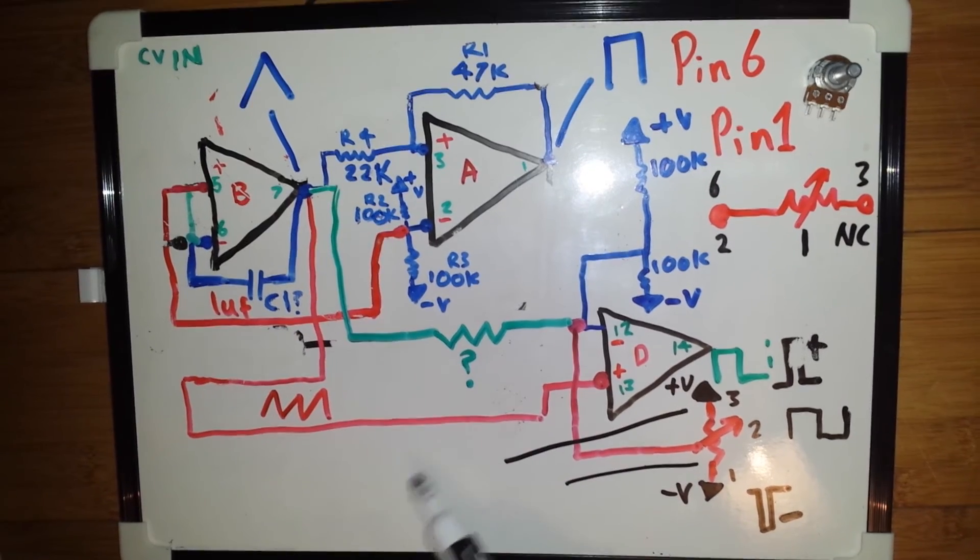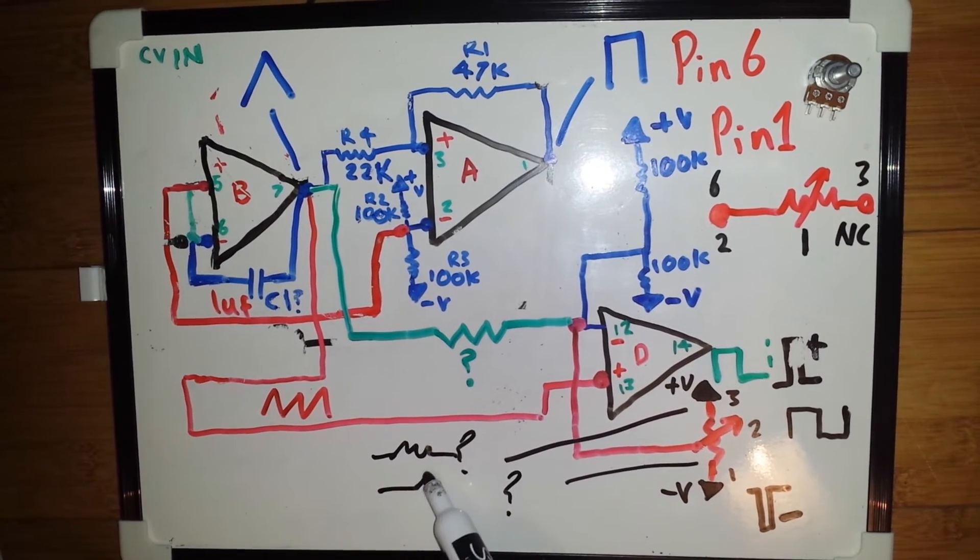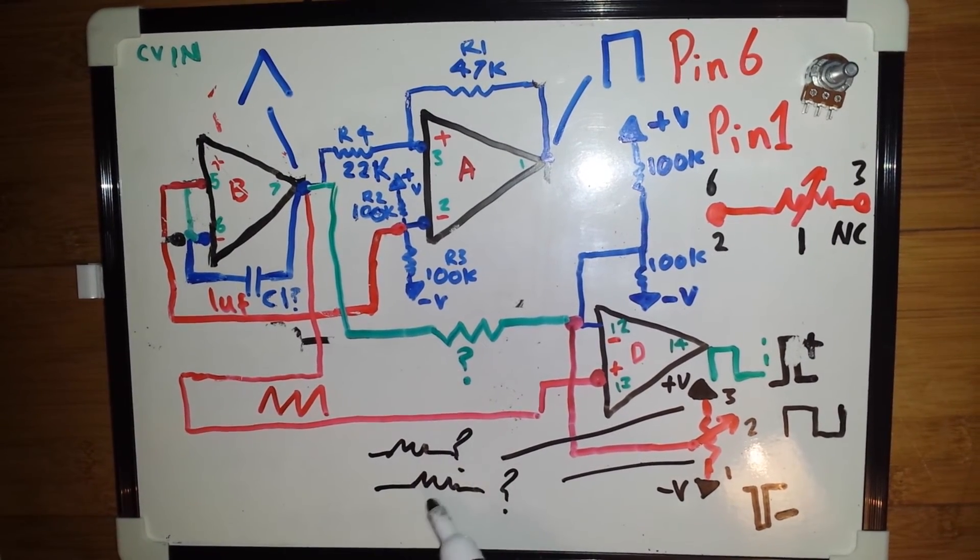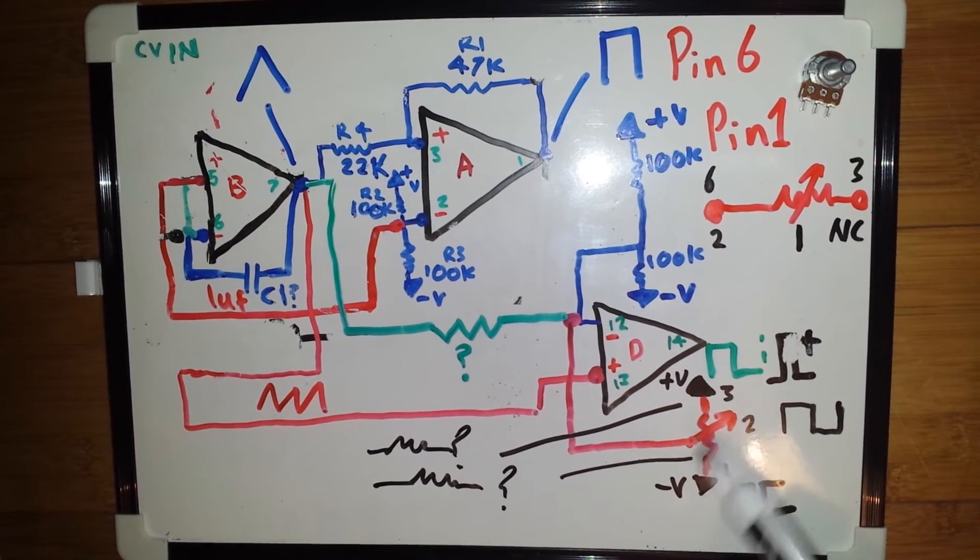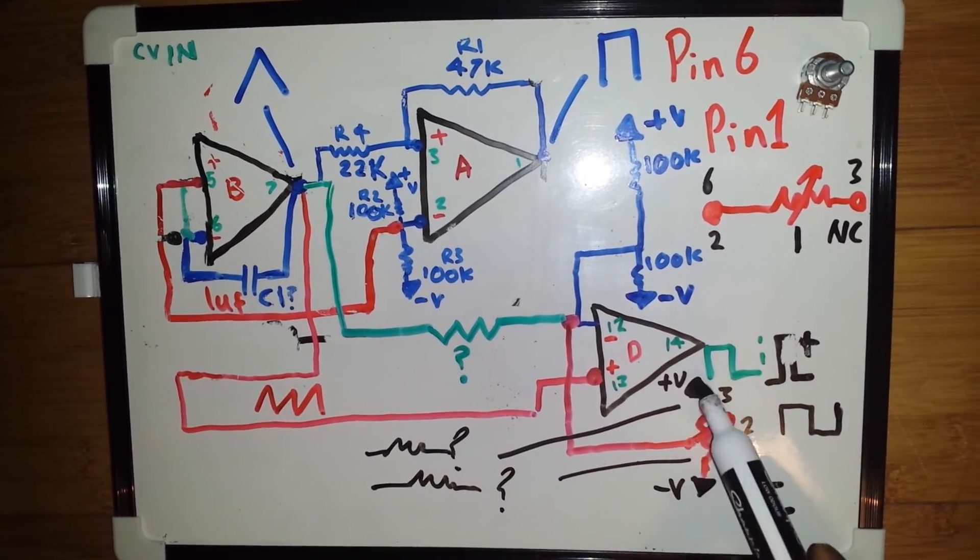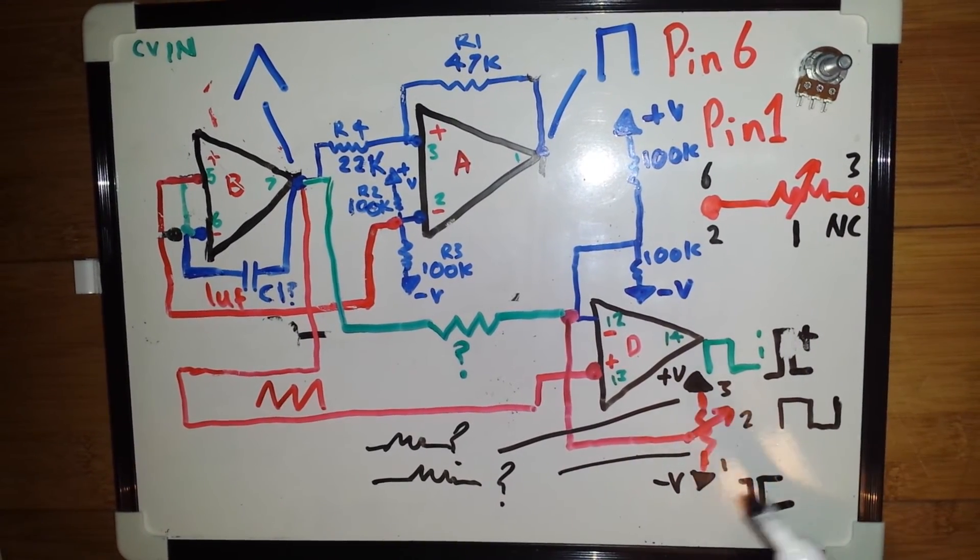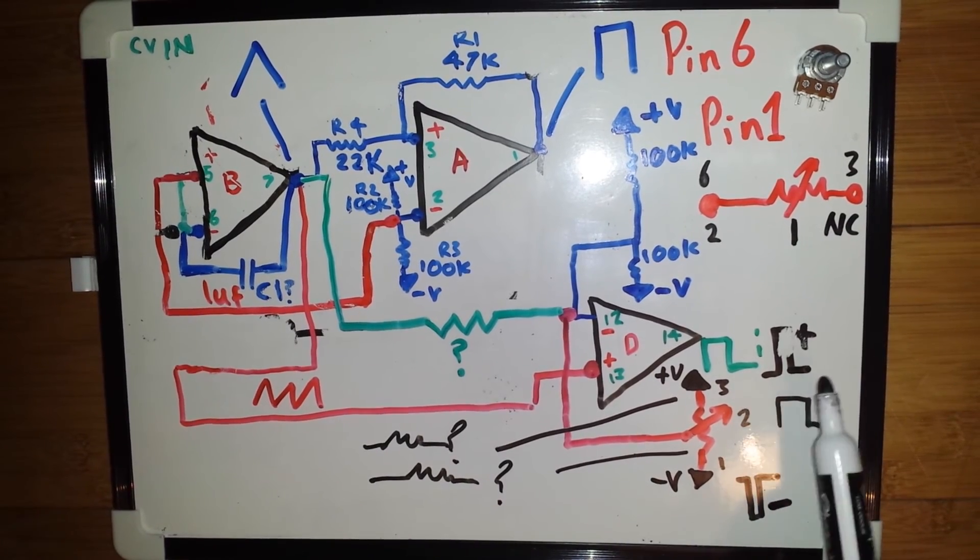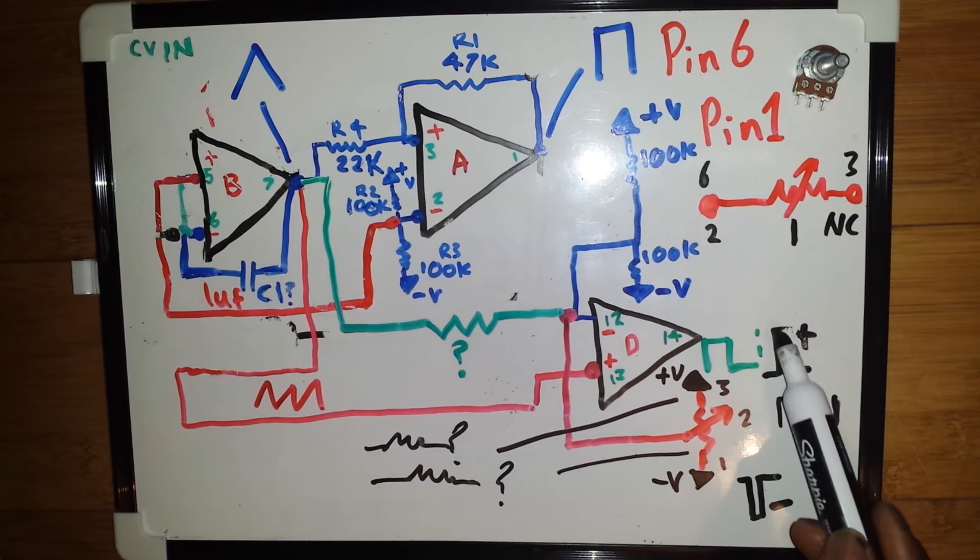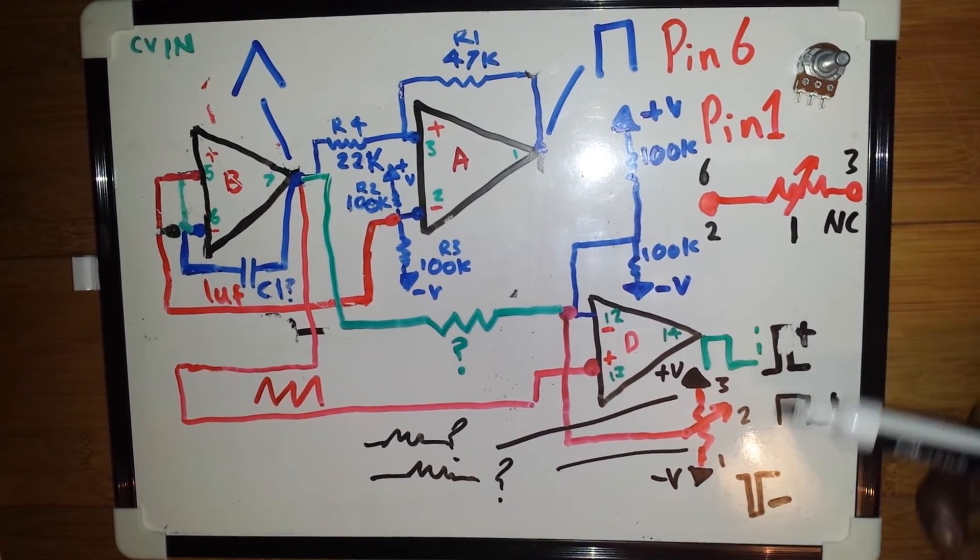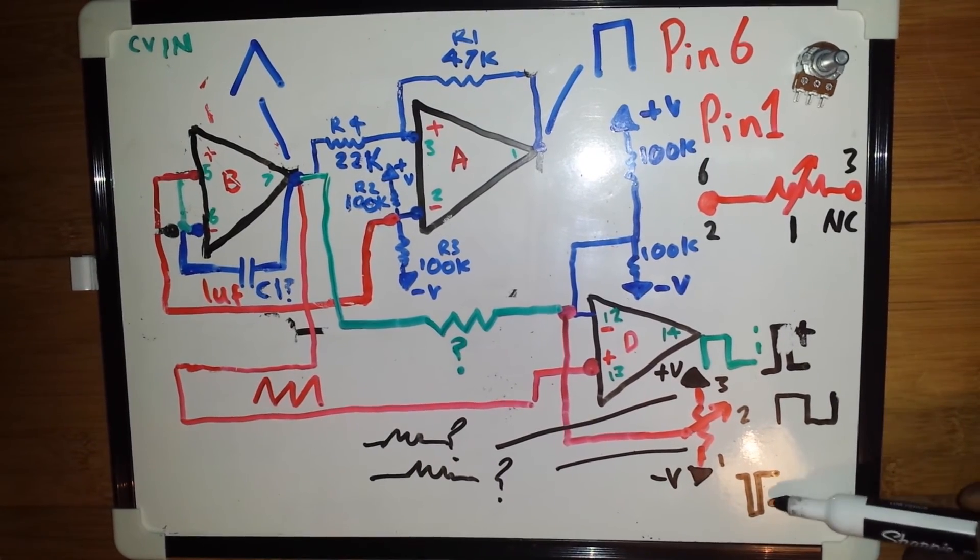And here we can see we can width modulate the square wave. Now on these parts here, we have a choice as well to put some resistance in there. It all depends on which kind of range you want, because it will be very dependent on your power rails. If you have plus 12 volts, minus 12 volts or plus 15 and minus 15, the values will vary. So we can try and get that to pretty much hit 90% duty cycle positive and 90% duty cycle negative. Otherwise, we're going to get nothing.